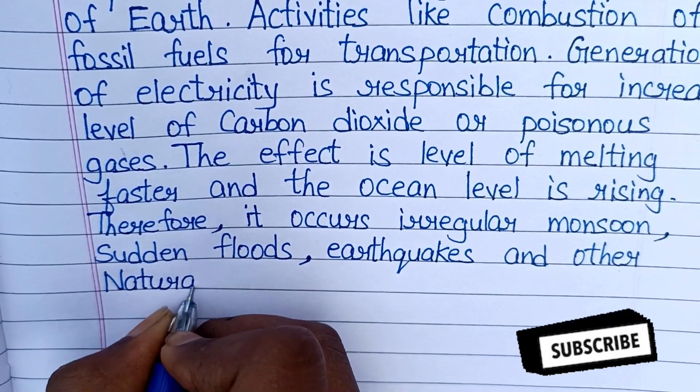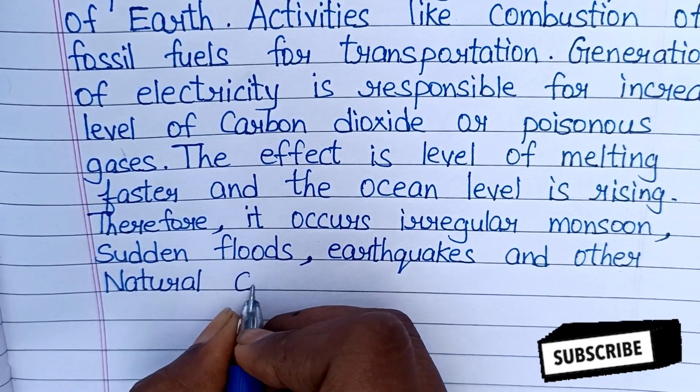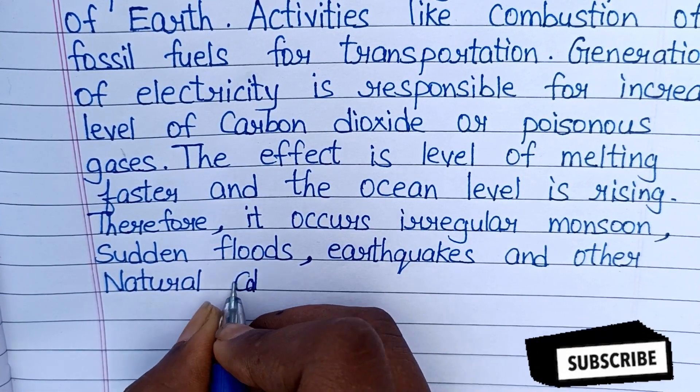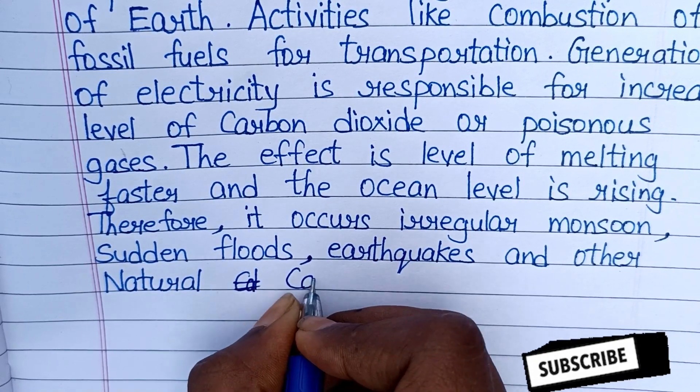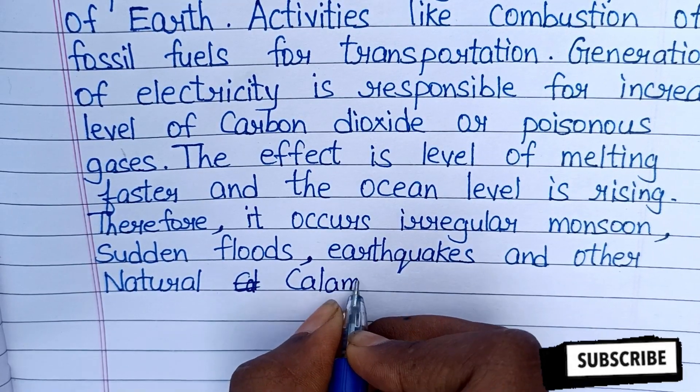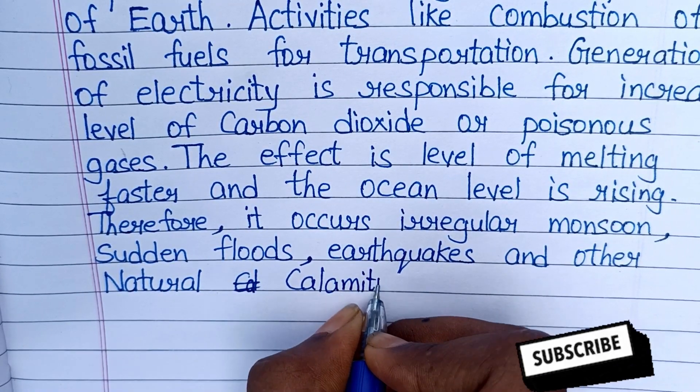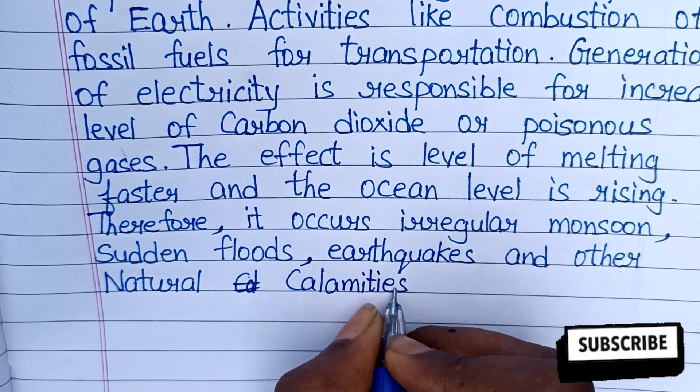Therefore, it causes irregular monsoons, sudden floods, earthquakes, and other natural calamities.